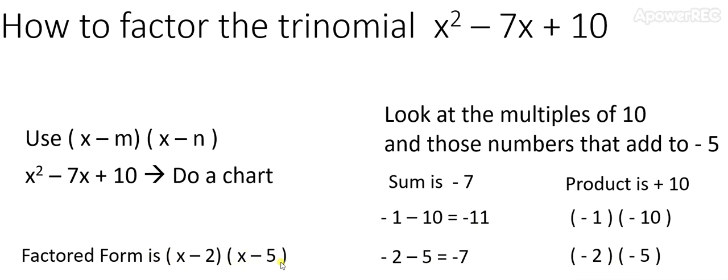To check that you've done this correctly, please note that minus 2 times minus 5 is positive 10. That works. And also, negative 2 minus 5 is negative 7, which works. Therefore, you've done your work correctly. Thank you.